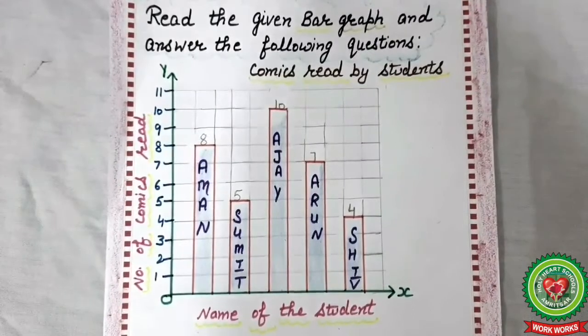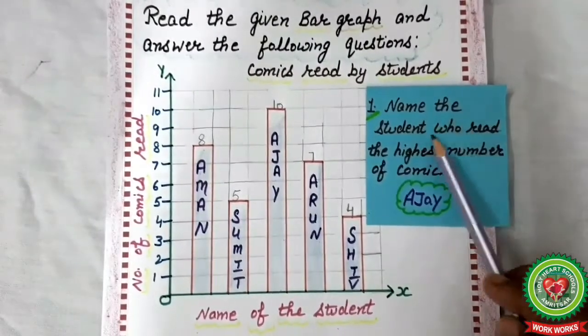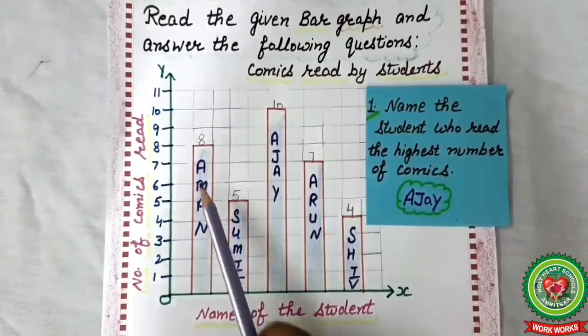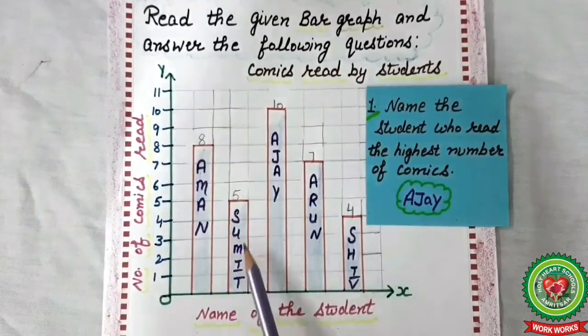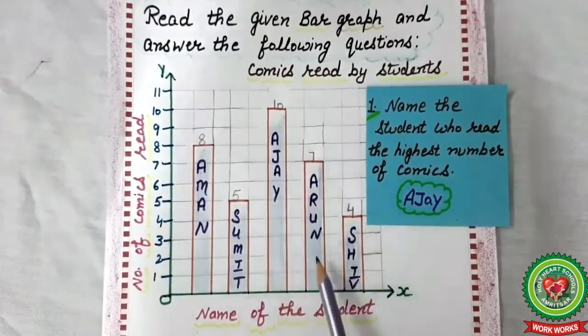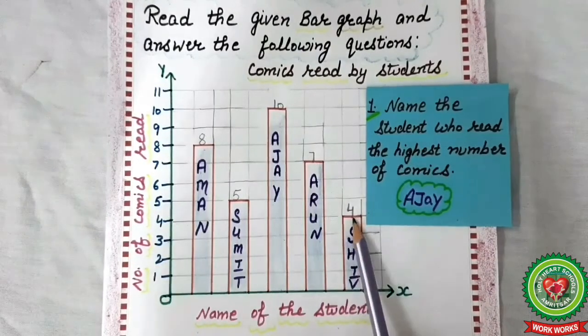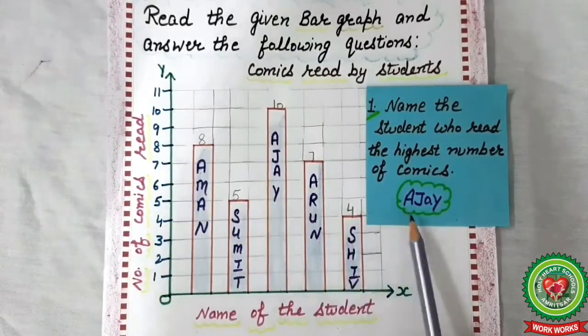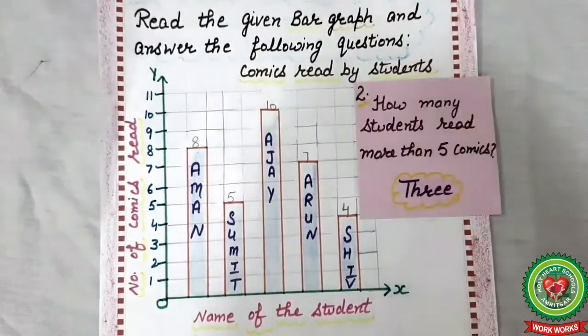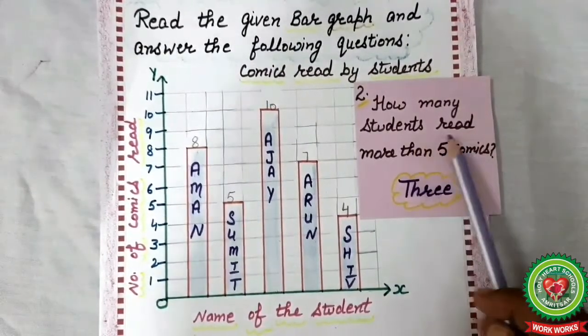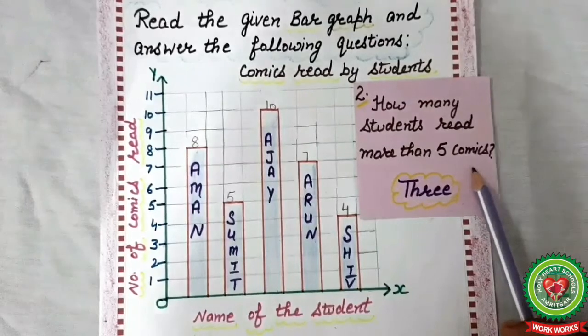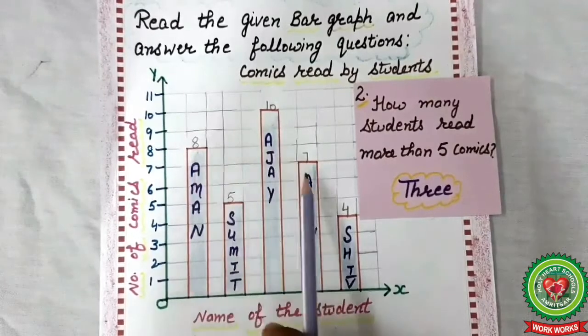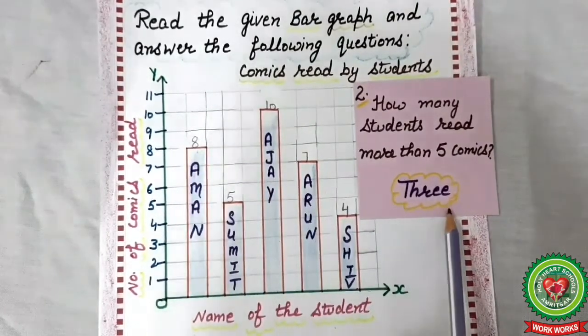Now we will answer some questions. First question: name the student who read the highest number of comics. The highest number of comics is AJ, so the answer is AJ. Question second: how many students read more than five comics? More than five: eight, ten, seven. How many students? Three students, so the answer is three students.